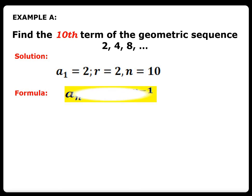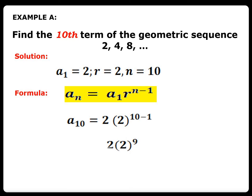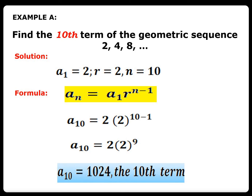Using the formula a_n = a_1 times r raised to n minus 1, by substitution we have a_10 = 2 times 2 raised to 10 minus 1. To simplify, a_10 = 2 times 2 raised to 9. When we simplify everything on the right side, a_10 is equal to 1,024. And that is the tenth term of 2, 4, 8.